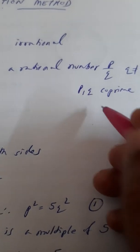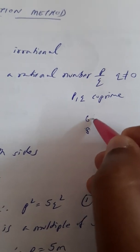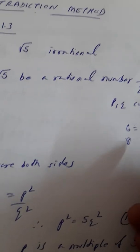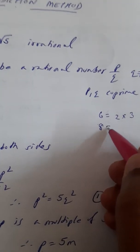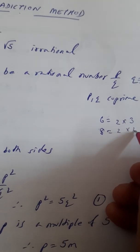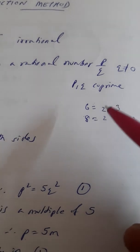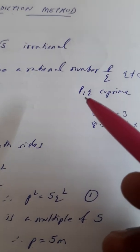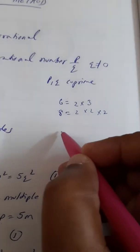So if you are having a number, let's say 6 and another number 8. Now what are the factors of 6? 6 factor will be 2 and 3. And 8 will be 2 multiplied by 2 multiplied by 2. So here we are having a common factor 2, so these are not co-prime.